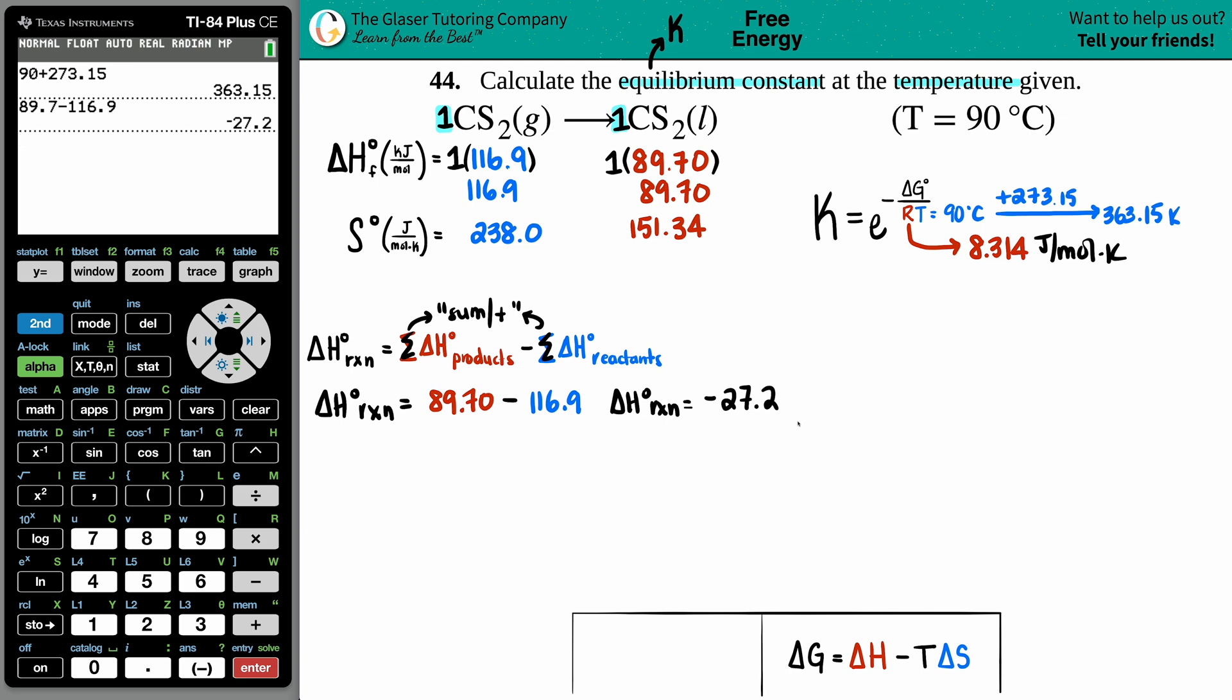Now we have to do the same process again to find out the delta S's. Same formula, but instead of using H's, I'm going to use S's. So the whole delta S for the entire reaction is the sum of all the products delta S minus the sum of all the reactants delta S. You do the same exact thing. Just for good practice, you take the values, times them by the coefficients - in this case they're both ones. You don't have to add here because there's only one substance, so the totals would be the same: 238.0 and 151.34.